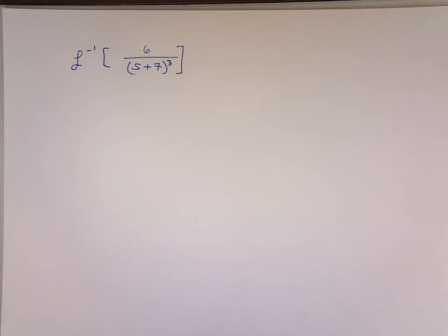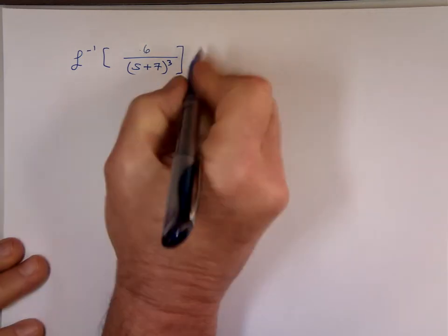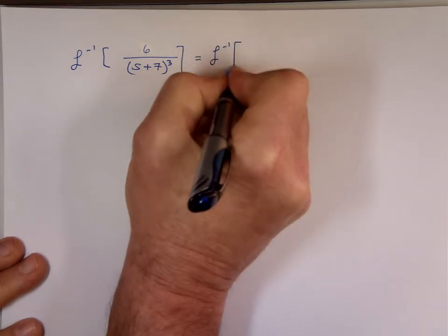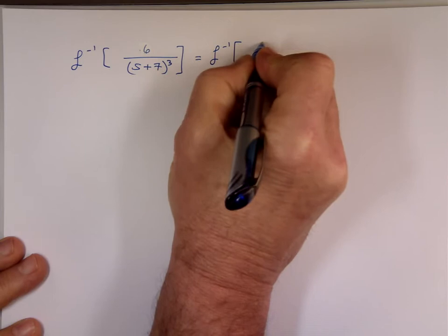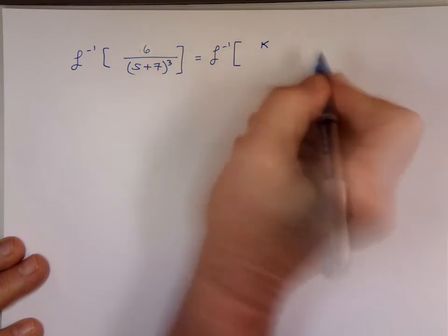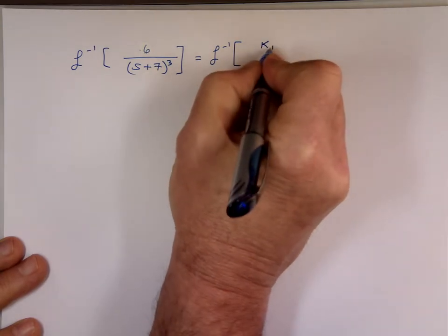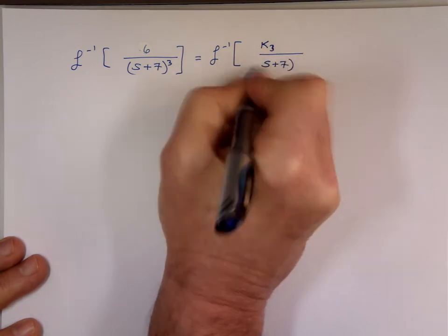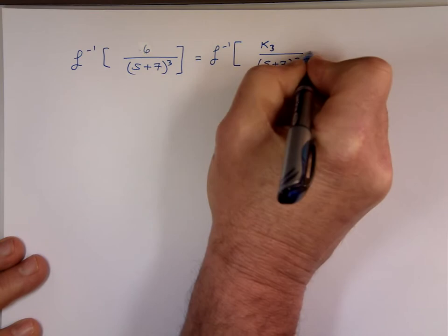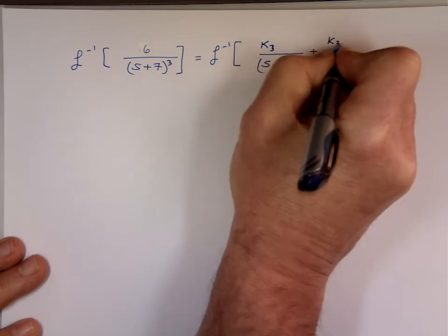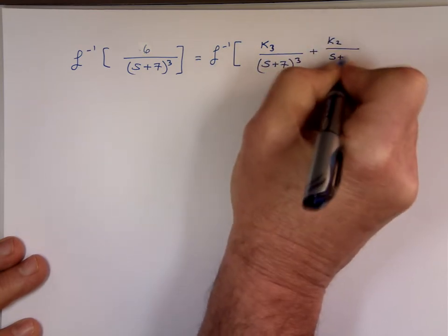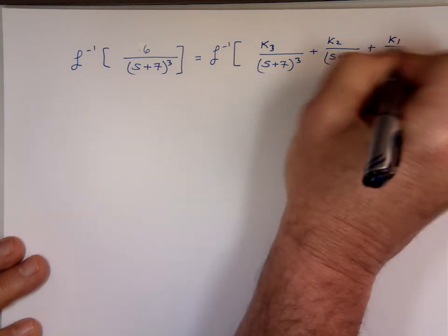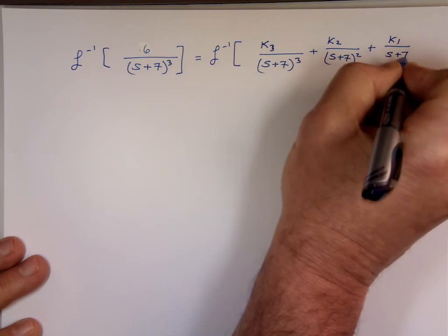Let's do another example of repeated roots. You can write the inverse Laplace — notice that's a power of 3. So you want to call them k1, k2, k3, matching the powers: k3 over s plus 7 cubed, plus k2 over s plus 7 squared, plus k1 over s plus 7.